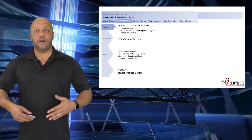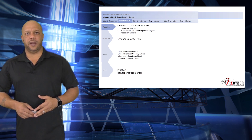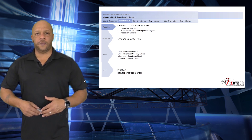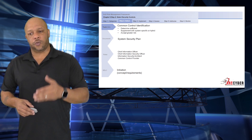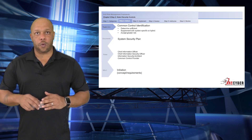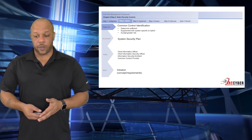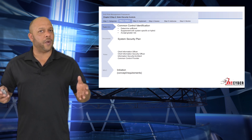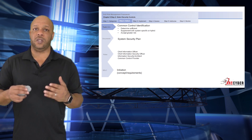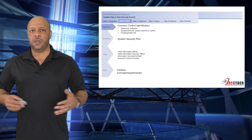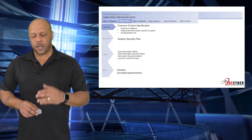Upon completion of this step, you will pretty much finalize the system security plan itself. Through the system control identification, we are going to determine whether or not the control is sufficient, supplement those controls with a system-specific or hybrid control, or possibly accept the greater risk. The primary roles involved in this step would be the CIO, the CISO, the information security architect, and the common controls provider.